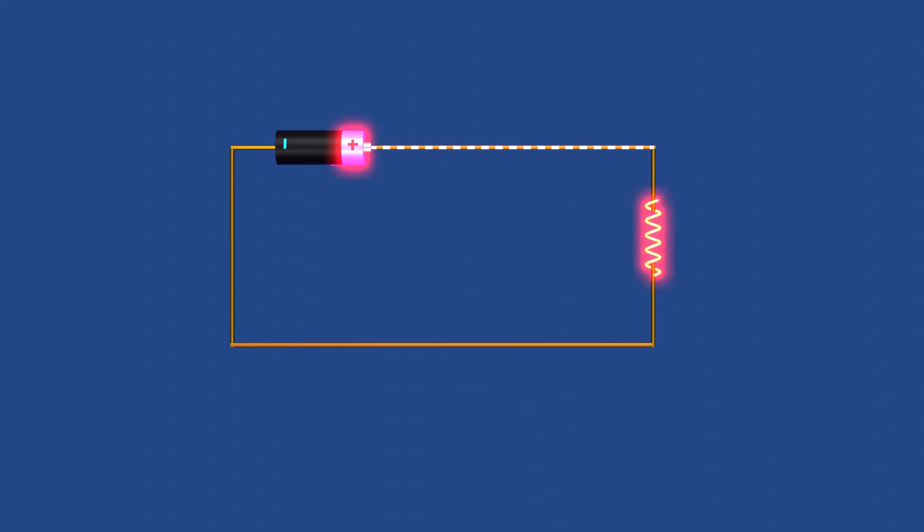This ability is characterized by a property known as resistance. Opposition offered by a material to the flow of electric current is called resistance.